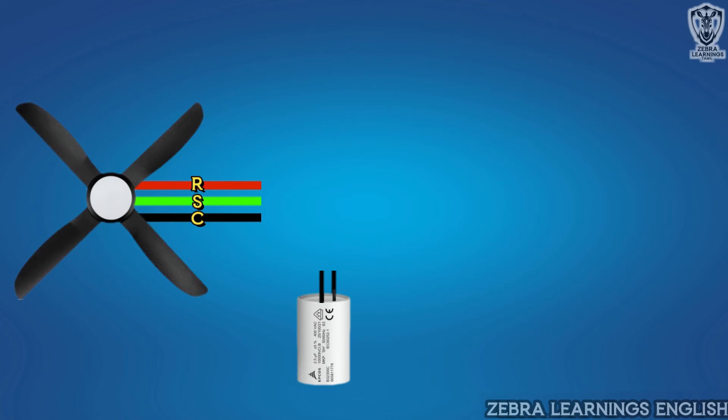The capacitor should be connected in series with the starting coil. That is, in the two terminals of the capacitor, one terminal should be connected to the common terminal, and the other terminal should be connected to the starting terminal.